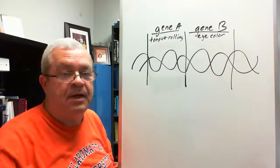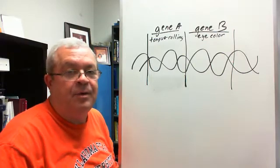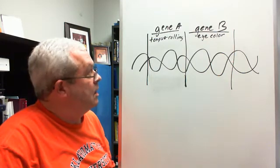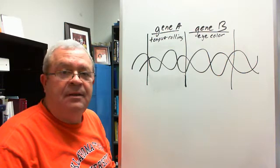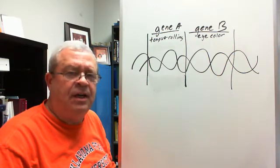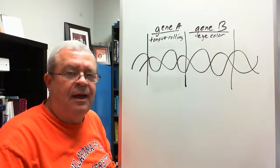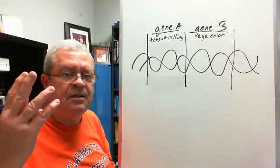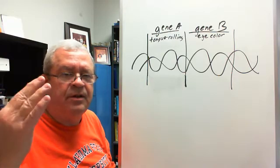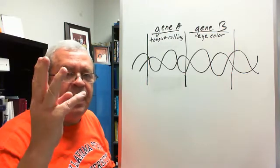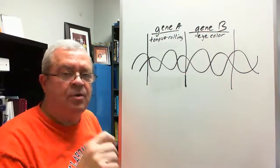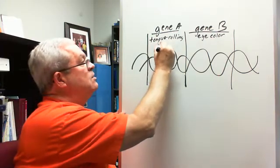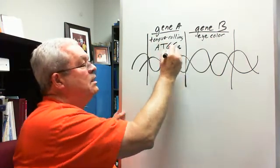I've got brown eyes because I inherited brown eye genes. So, what is a gene? A gene is a bunch of letters — DNA letters. How many? Four. Isn't a gene a bunch of A's, T's, G's, and C's?